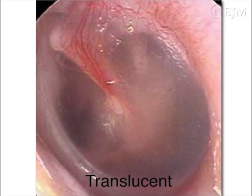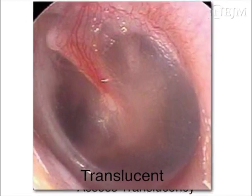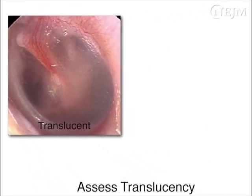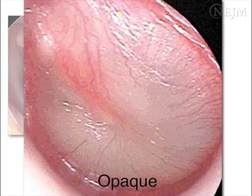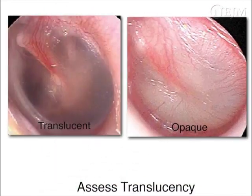Next, assess the translucency of the tympanic membrane. A translucent tympanic membrane has a ground glass appearance and allows visualization of the underlying middle ear structures. When middle ear effusion is present, the tympanic membrane appears opaque and visualization of middle ear landmarks is impaired.